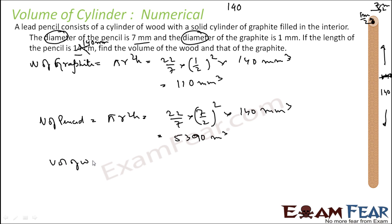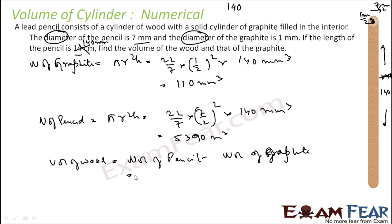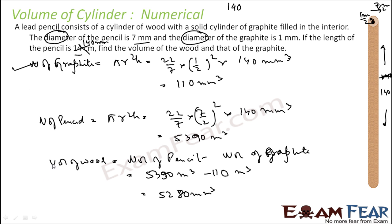Volume of wood = volume of pencil − volume of graphite = 5390 − 110 = 5280 millimeter cube. The pencil is made of graphite and wood, so the volume of wood is simply the total pencil volume minus the graphite volume.